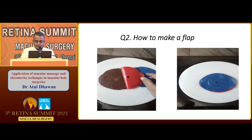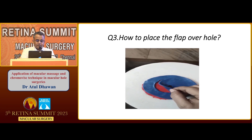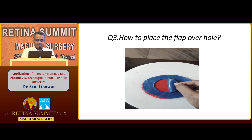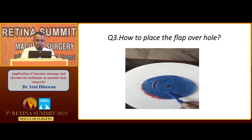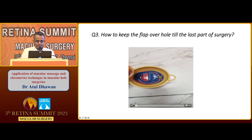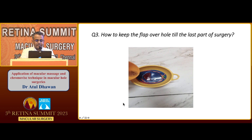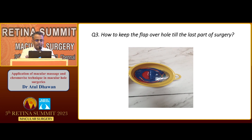How to place the flap over the hole? From one margin, take out the flap and place it from one side to the other very easily. The third question is how to keep the flap over the hole till the end of surgery. Place a temporary viscoelastic — temporary tamponade by viscoelastic colored with brilliant blue or any other dye. Then tilt the eye toward the disc, do the fluid-air exchange, and the flap will remain over the hole till the end of surgery.